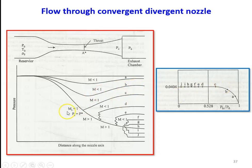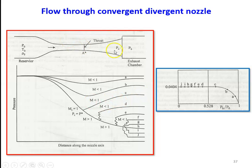Curve C corresponds to a throat Mach number equal to 1 — the critical condition. Up to the throat the Mach number reaches 1, and then after the throat section, the divergent portion is again acting as a diffuser with increasing pressure.